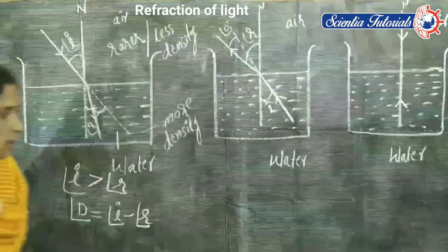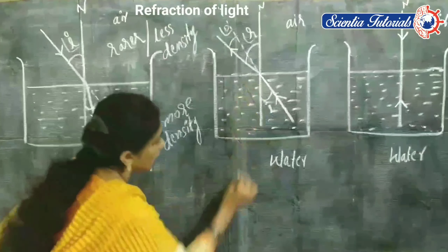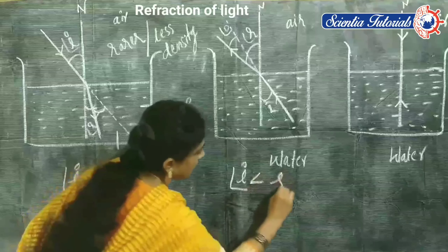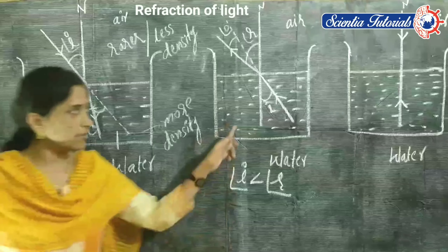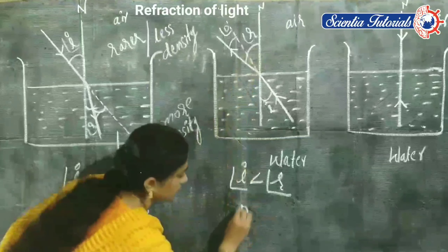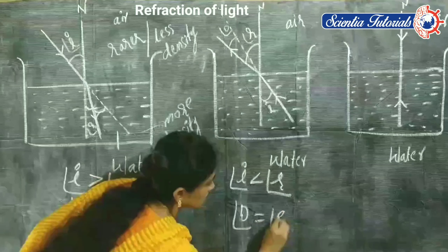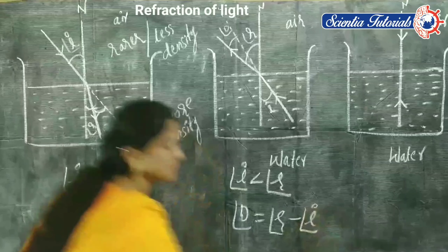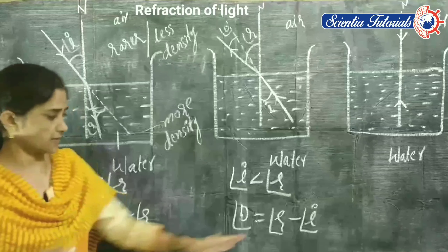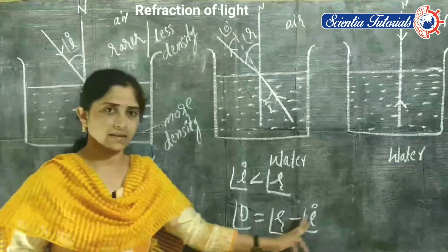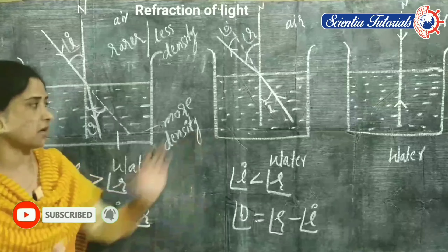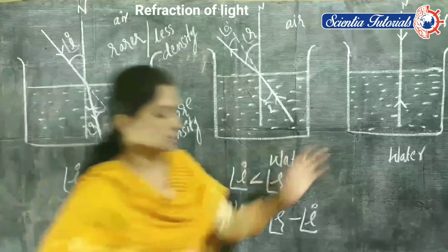In this situation, what is the angle of incidence compared to the angle of refraction? Here, angle of incidence is less than angle of refraction — the angle of refraction is greater. So the angle of deviation in this case is: angle D equals angle R minus angle I — angle of refraction minus angle of incidence. This is the second condition.